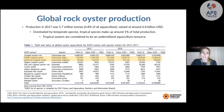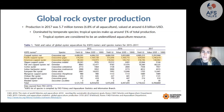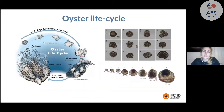Global rock oyster production in 2017 was 5.7 million tons, about 6.8 percent of all aquaculture production, valued at around 6.8 billion US dollars. The species that dominate are Crassostrea gigas and Crassostrea virginica — both temperate species. Tropical species aren't even listed and make up around one percent of total global production, so tropical oysters are considered an underutilized aquaculture resource.